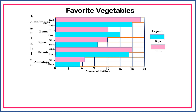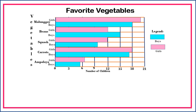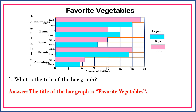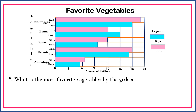What kind of bar graph is this? This is a double horizontal bar graph. So let's interpret the data presented in the graph by answering some questions. Number one: what is the title of the bar graph? The title of the bar graph is 'Favorite Vegetables.' Next question: what is the most favorite vegetable among the girls as shown in the graph?